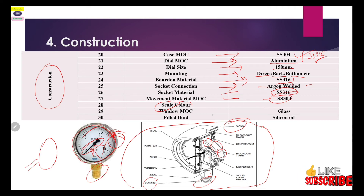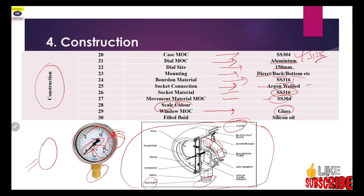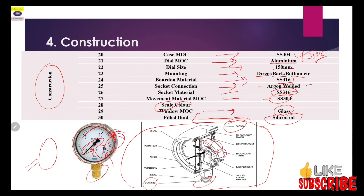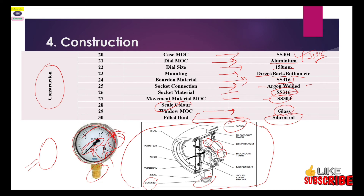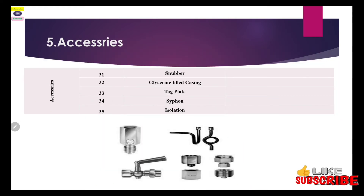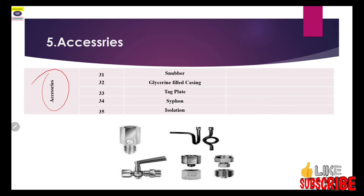Scale color can be black or white as per your requirement. Window MOC is glass. If you observe fluctuation in the pressure gauge or in the pump discharge, you can also use silicon oil filling to stabilize the reading and maintain the range of the pressure gauge.